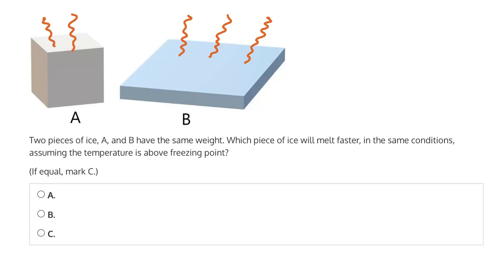Now the rate at which this occurs is going to depend on the surface area, or the SA, of both of these pieces of ice.